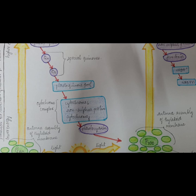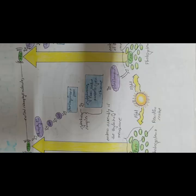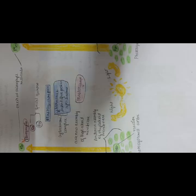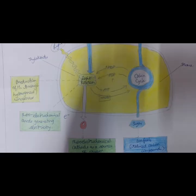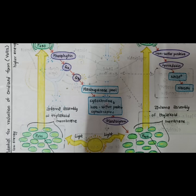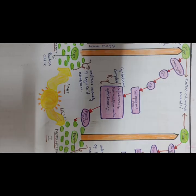NADPH formation. The high energy electron travels down a short second leg of the electron transport chain. At the end of the chain, the electron is passed to NADP-plus along with a second electron from the same pathway to make NADPH.